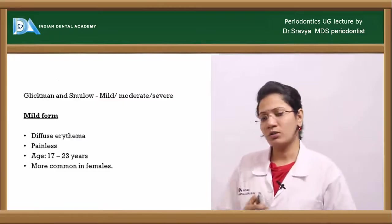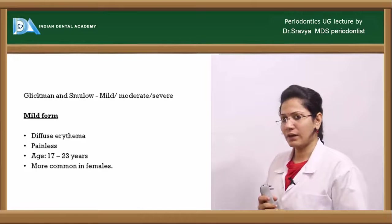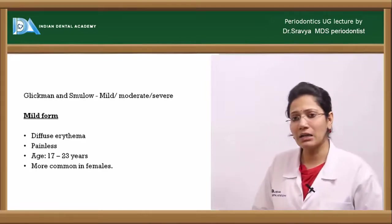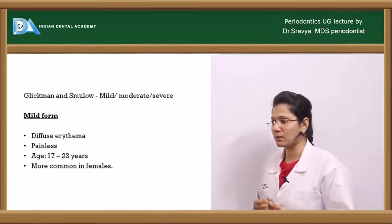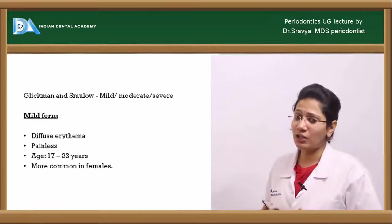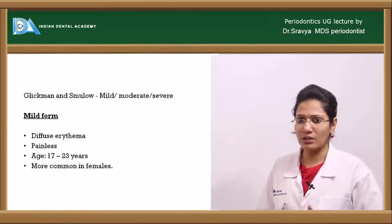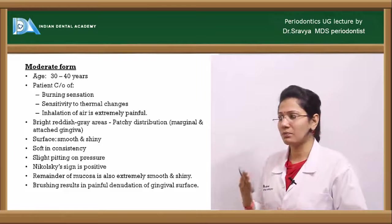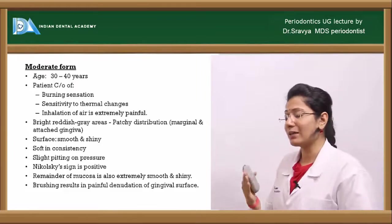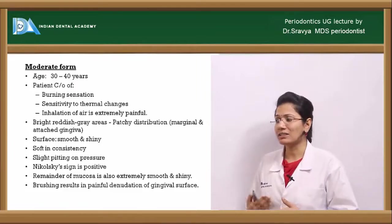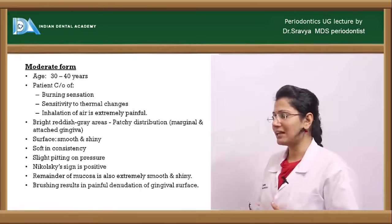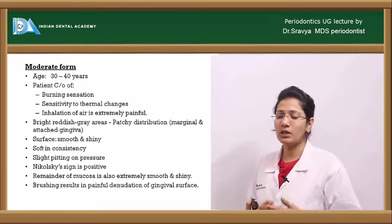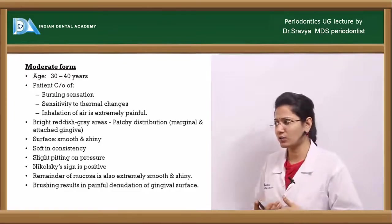Glickman and Smollor classified clinical features as mild, moderate, and severe. The mild form presents as diffuse erythema, is usually painless, and affects ages 17 to 23 years, most commonly females. The moderate form affects ages 30 to 40 years, with a chief complaint of burning sensation, sensitivity to thermal changes, and even inhalation of air becoming extremely painful due to desquamation of the epithelium exposing underlying connective tissue.